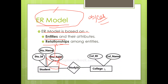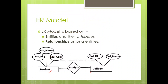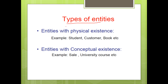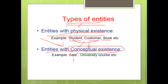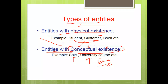This is an example of entities and their relationships — student entity and college entity. There are two types of entities: entities with physical existence and entities with conceptual existence. Examples of physical existence entities are student, customer, book, etc. Entities without physical existence have conceptual existence.